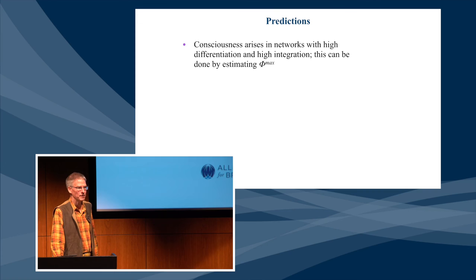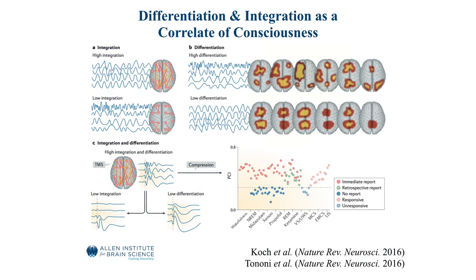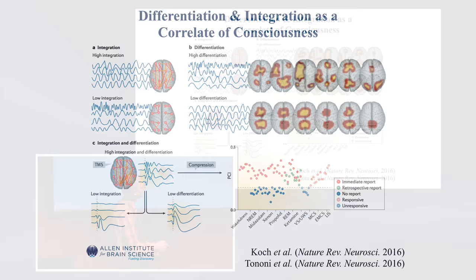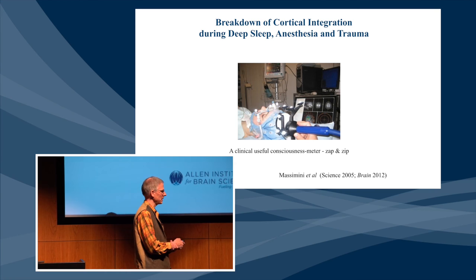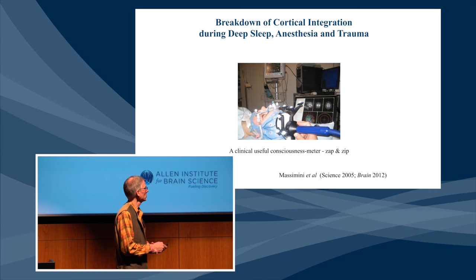Phi in principle can be computed for any one particular mechanism in a particular state, and it can be estimated for things like the brain. Here I show what I mean in terms of a brain in a highly integrated versus a low integrated state — the measure of integration being something like functional connectivity, or different EEG patterns over time. As the brain evolves, you see many different patterns — highly differentiated versus low differentiated. People have attempted to measure this in a series of papers in Science and in Brain.